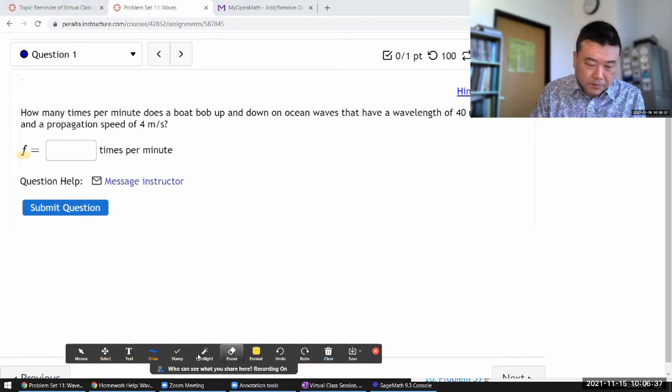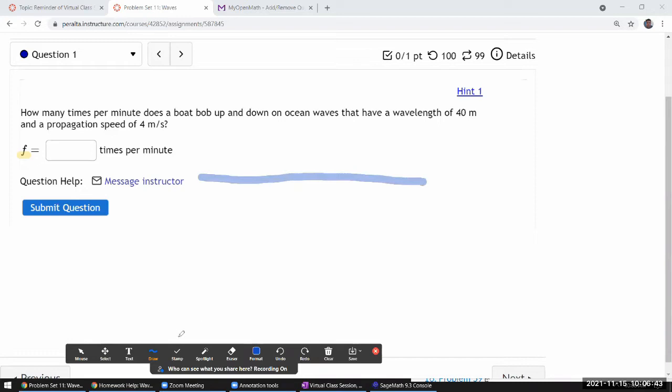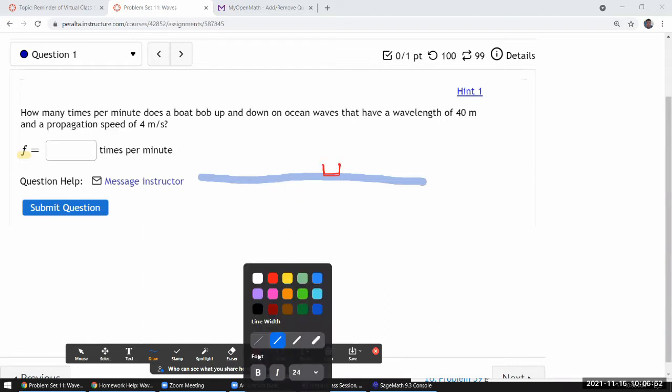Let me just draw a picture to help visualize. So imagine an ocean, and we have a boat that's floating on it. I can't draw a boat, let me just draw a box. We have a boat that's floating on it.